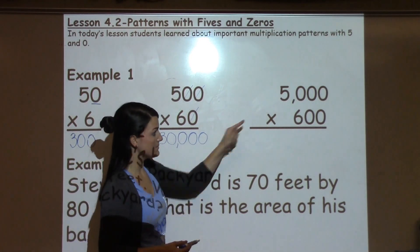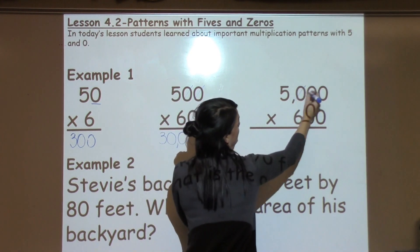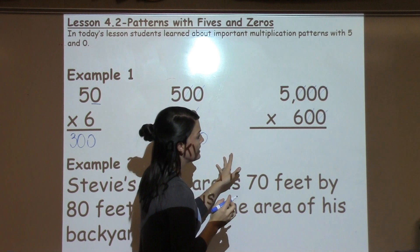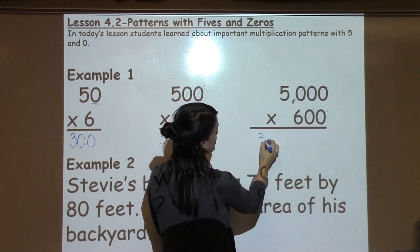So the last problem says that we've got 5,000 times 600. I'm going to cross off the 0s that are on the back. Then I'm just going to focus on the numbers at the front. 5 times 6 is 30.